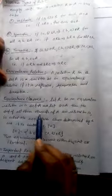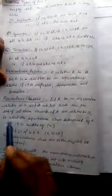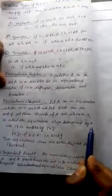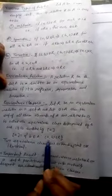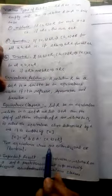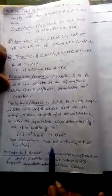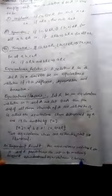After this, another important topic is equivalence classes. Let R be an equivalence relation in a set A, and let a belong to A. Then the set of all those elements of A that are related to a is called the equivalence class determined by a, denoted as [a]. Two equivalence classes are either disjoint or identical. An important result: an equivalence relation on a set A partitions the set into mutually disjoint equivalence classes.